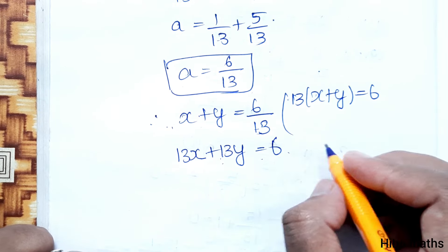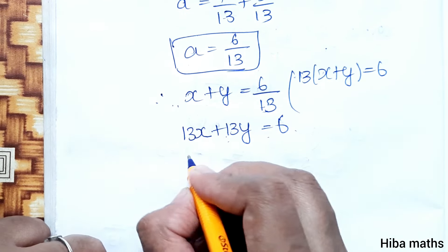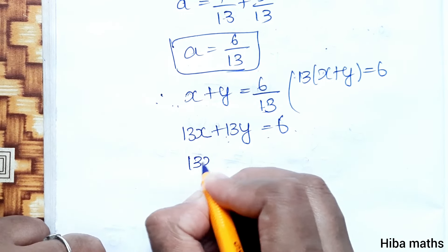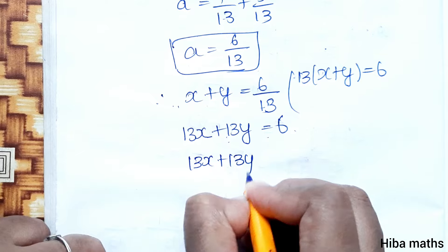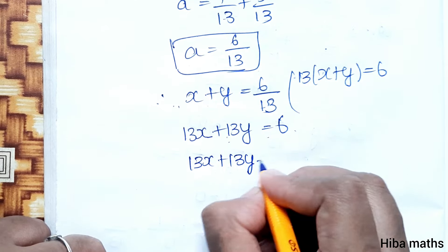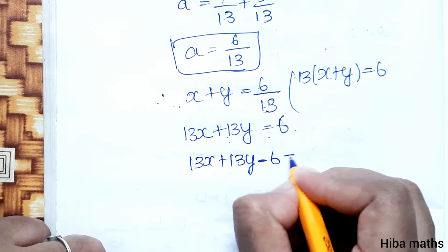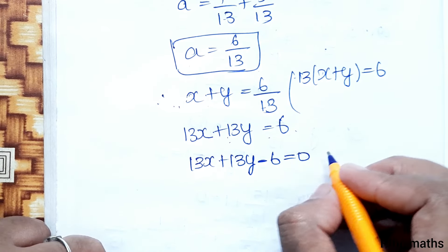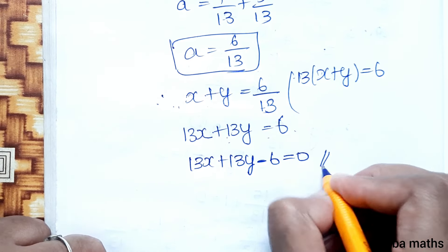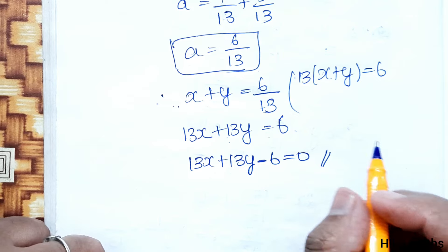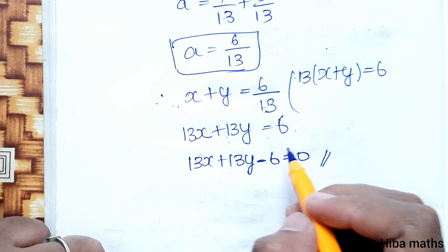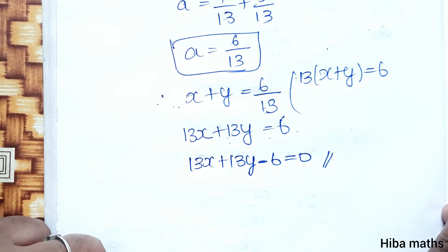This is the required equation. Writing it in standard form: 13x + 13y - 6 = 0. Thank you so much for watching.